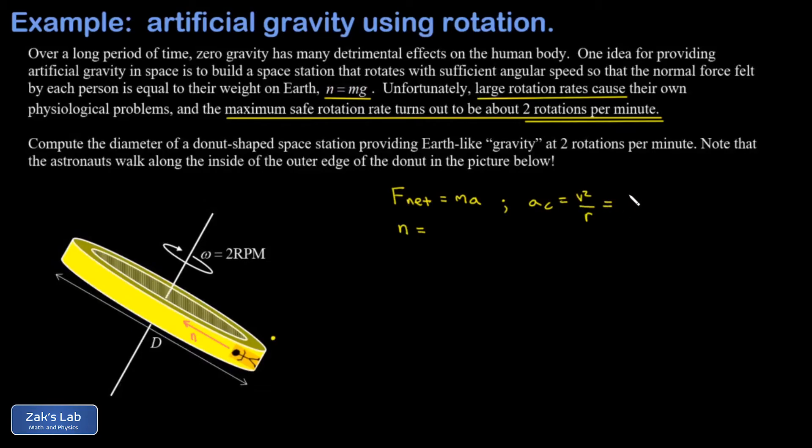We can express the speed of this astronaut by looking at one full rotation. The distance they cover is one circumference, or 2πr. The time it takes is one period, capital T. And so we get 4π²r² over T² in that numerator.